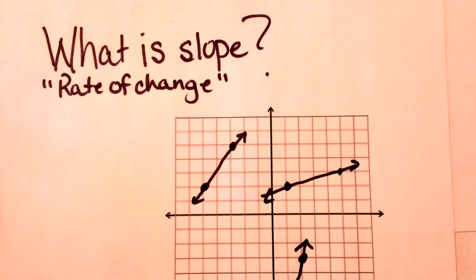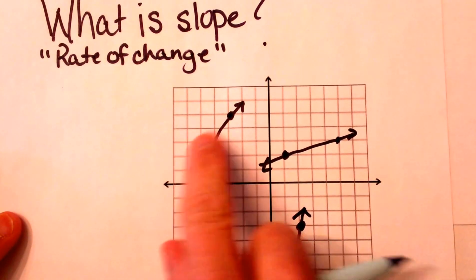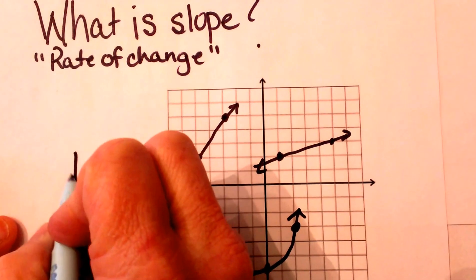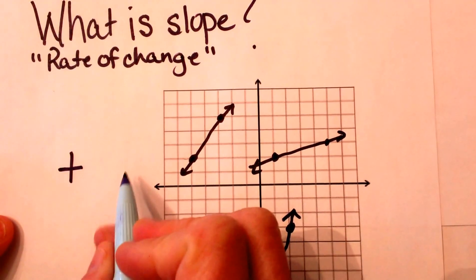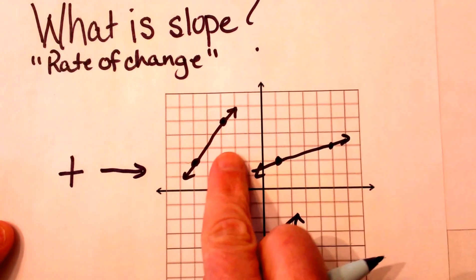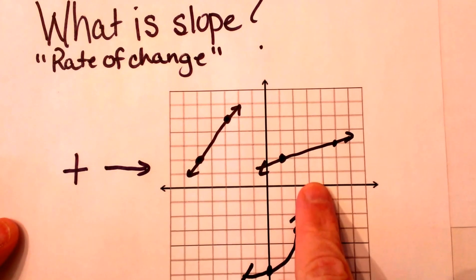So let's look at the slopes of these lines in the graphs right here. All three of these on this first graph have what we call a positive slope. Why? Because as you move from left to right, just like when you read, your slope is increasing. So you always go left to right and these are all increasing.